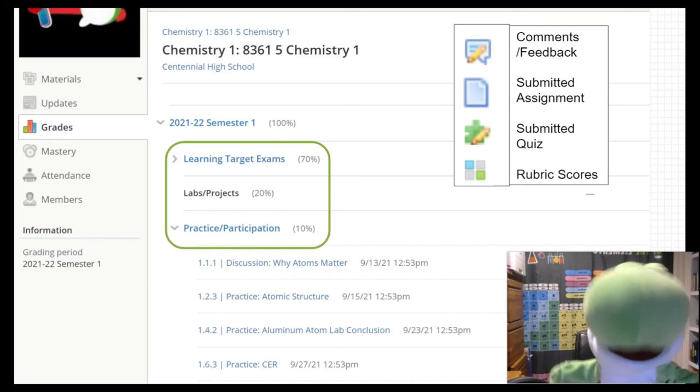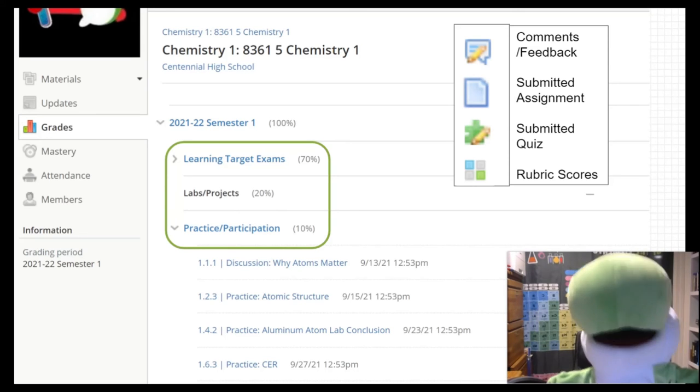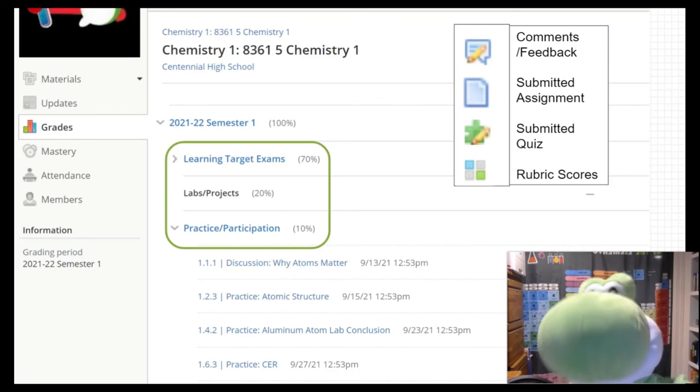Also in the Grades section, you might see comments or feedback. This also lets you know if you submitted assignments or not by a little paper icon or submitted a quiz or not by a little puzzle icon. You might also see some rubrics for different projects that we do.